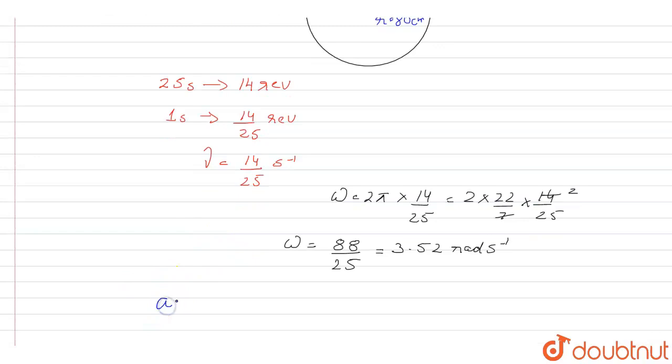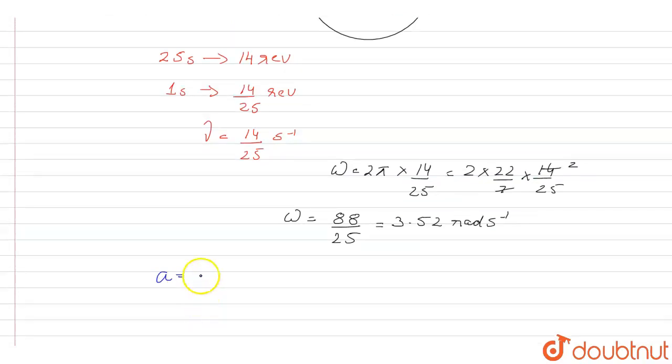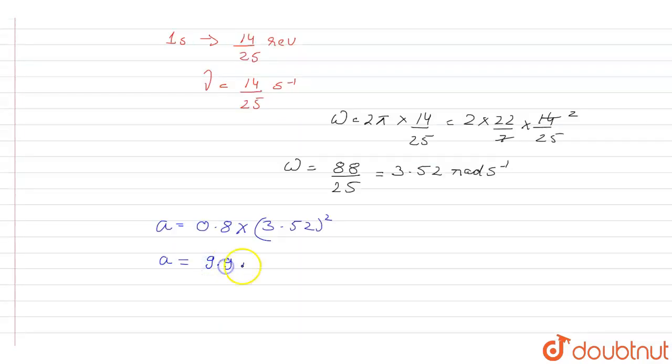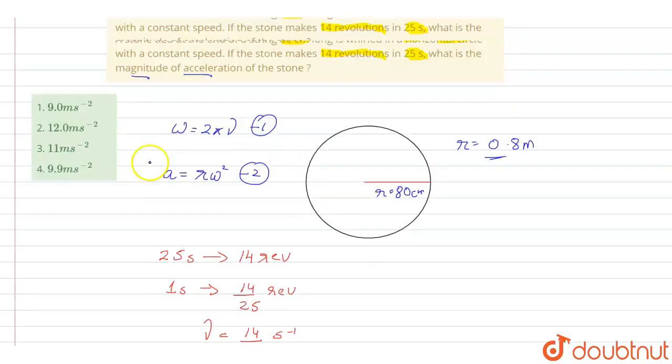Therefore, centripetal acceleration will be equal to r, that is 0.8, times omega squared. Omega is 3.52 squared. Therefore, the acceleration will come out to be 9.9 meters per second squared. So the correct option will be option 4.